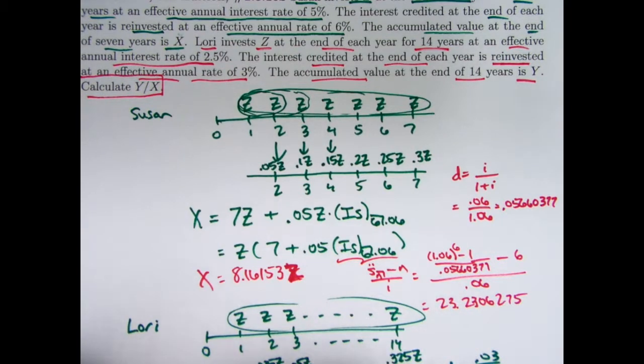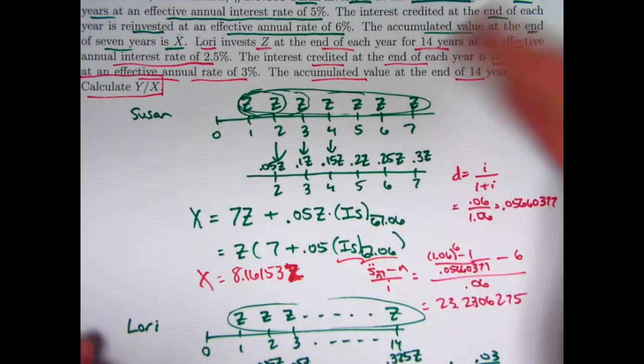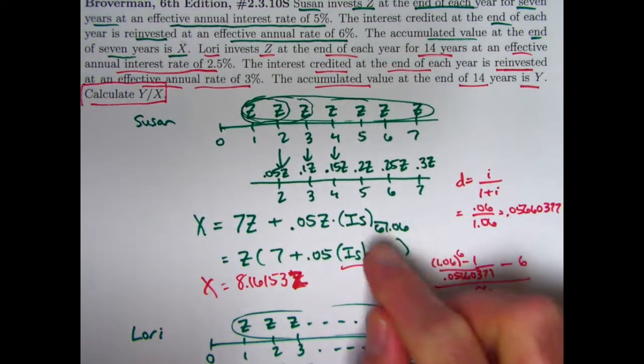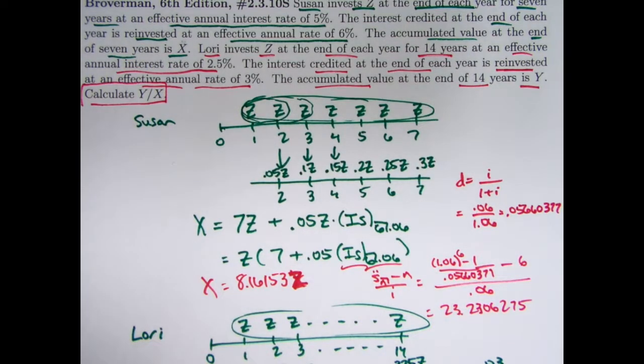The main thing here is it's kind of a difficult problem to think through and problem solve. You also need to realize we need to use this formula for the future value of an increasing annuity.